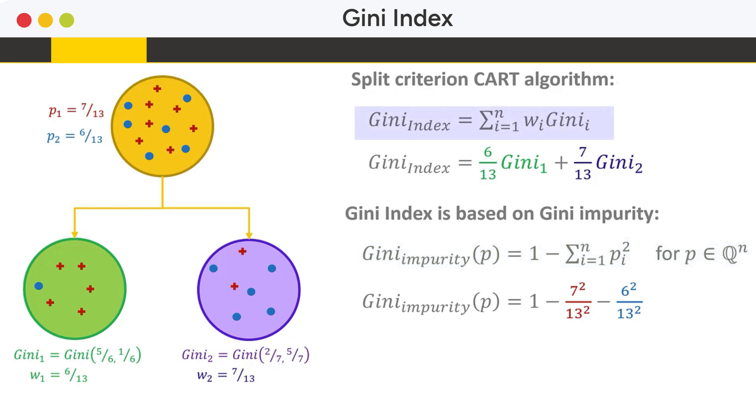The Gini index is the weighted sum of the Gini impurity for different subsets after a split. The feature with the lowest Gini index is used as the next splitting feature.